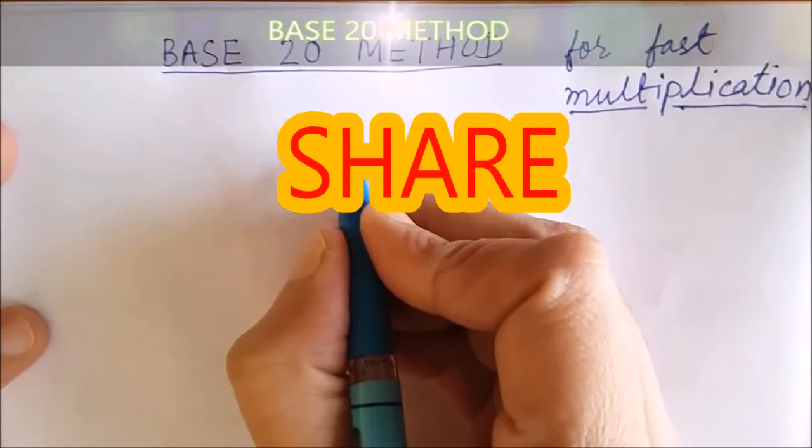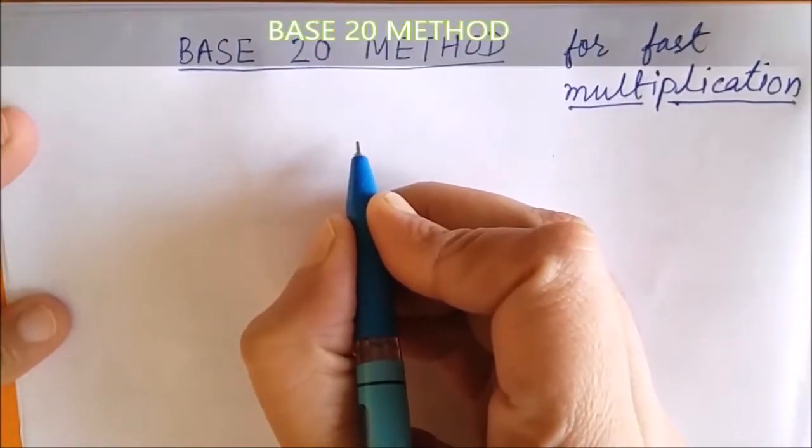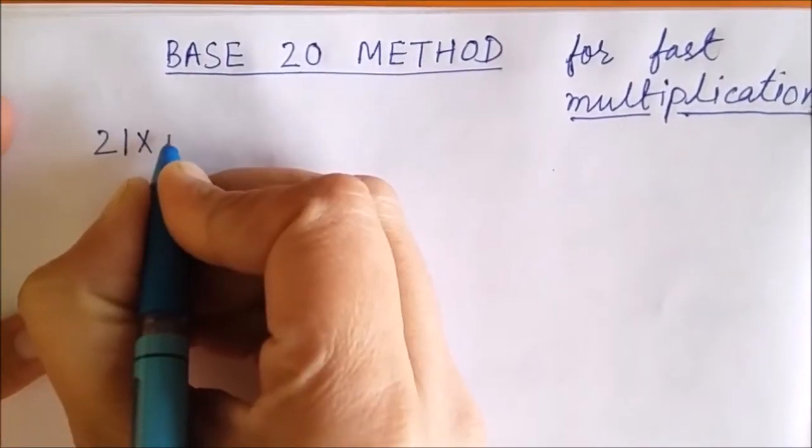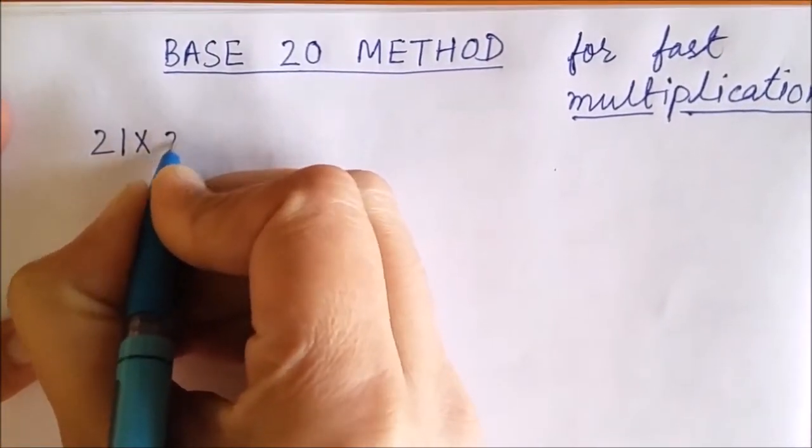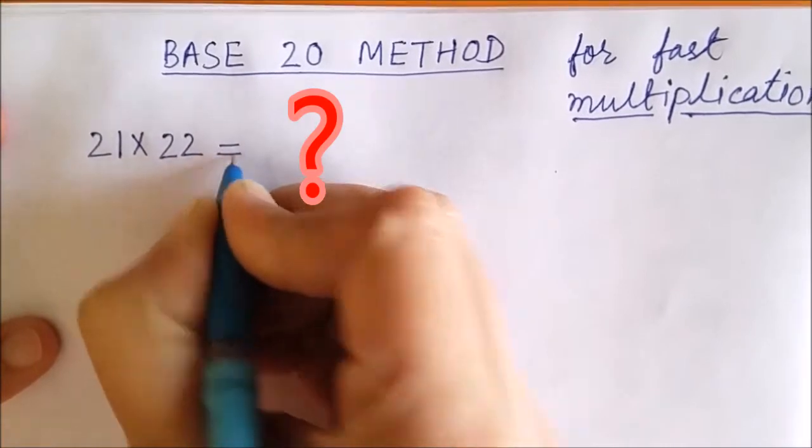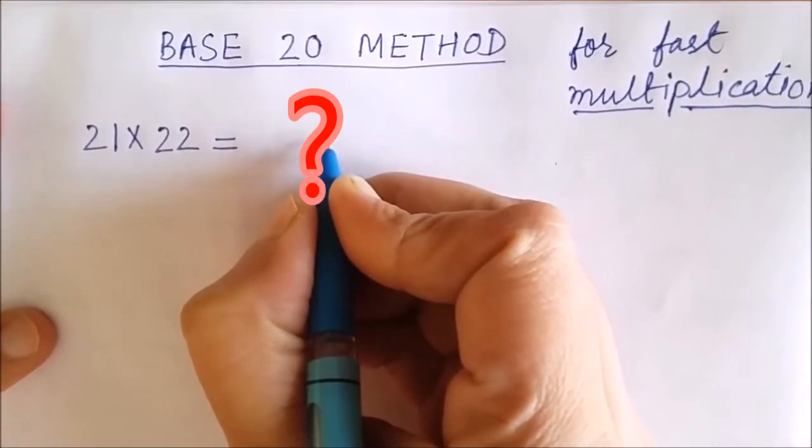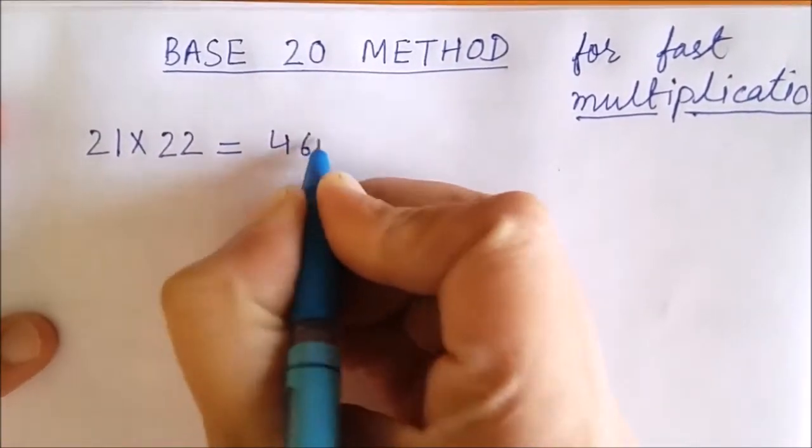In this video, we'll learn to multiply two digit numbers that are close to 20 very fast in few seconds. See how I am doing. If we need to multiply 21 by 22, what's your answer? I am giving you 4 seconds. My answer is 462.